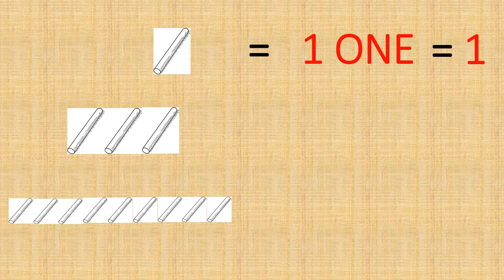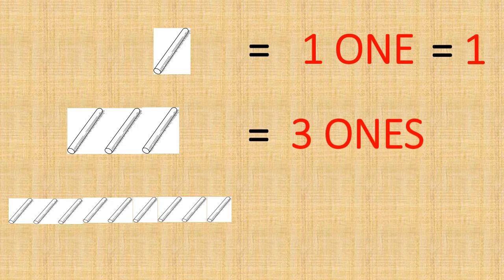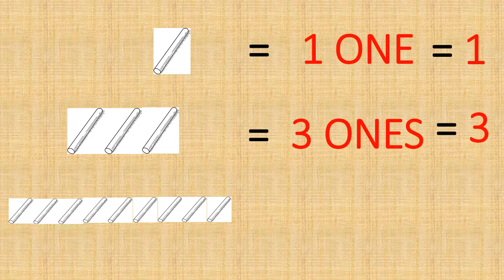How many ones do we see in the next picture? Let's count. One, two, three. We have three ones, which is also written as only number three.